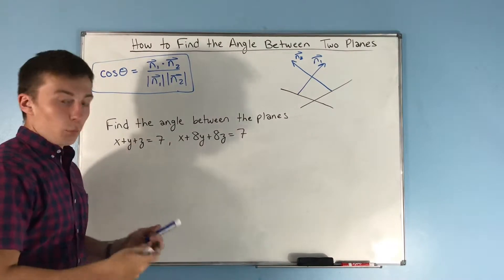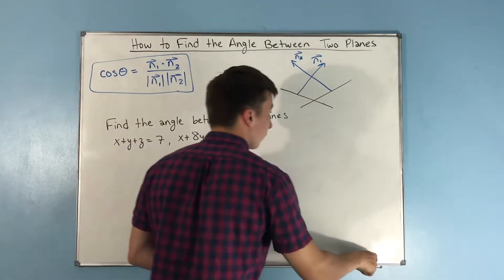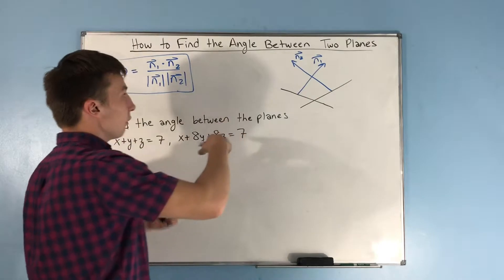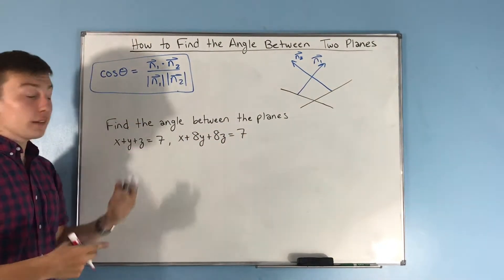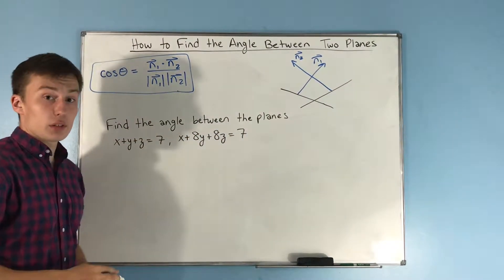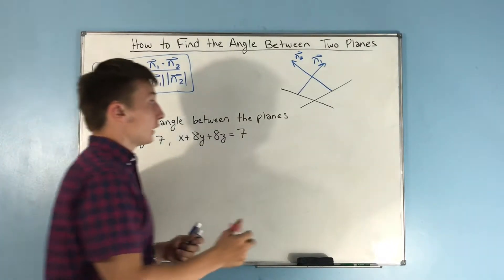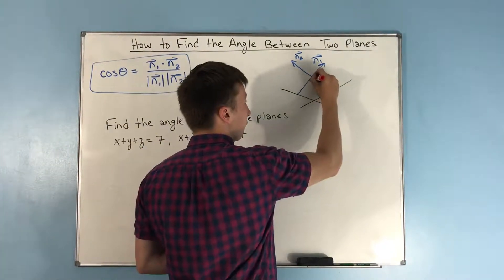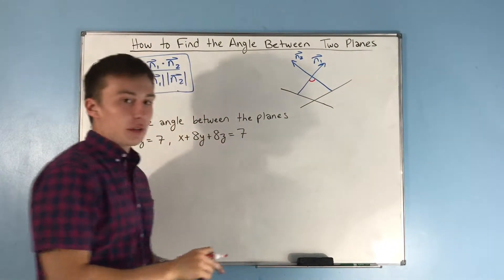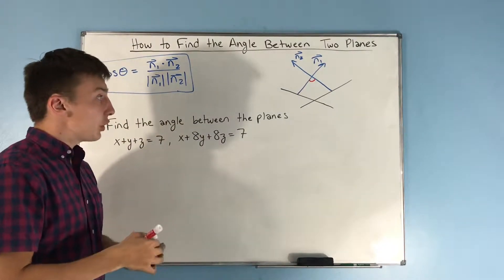Now, what you'll notice is that if we're finding, I mean, really right here, we're finding the angle between these two vectors. That's n1 and n2, so we're actually finding this angle. We're not finding this angle down here.